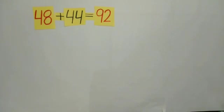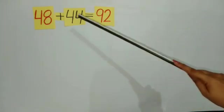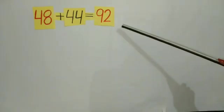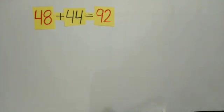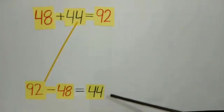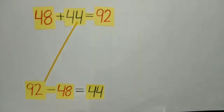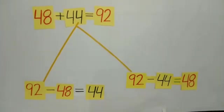Now we will solve our next sum. Students, when I add 48 and 44, what do we get? Yes, 92. Now, when I subtract 48 — the first number — from 92, what do we get? Yes, 44, meaning the second number 44 is left. Now see students, when I subtract 44 — the second number — from 92, what do I get? Yes, 48, meaning the first number.